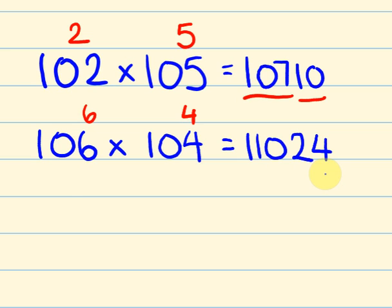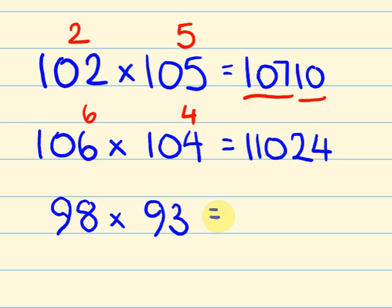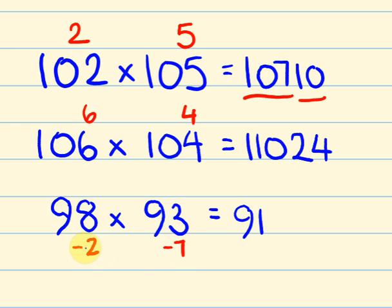I'm going to make it a little bit more difficult now. What about a question where both the numbers are below 100 — something like 98 times 93. Now you're looking at how much below 100 each number is. I'll write this as minus 2 and minus 7. We add these together: minus 2 plus minus 7. A minus plus a minus makes you even more minus, so minus 2 plus minus 7 is minus 9. So minus 9 plus 100 gives us 91. And then minus 2 times minus 7 is 14, and we add that on top.